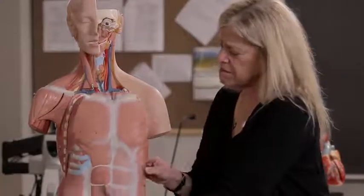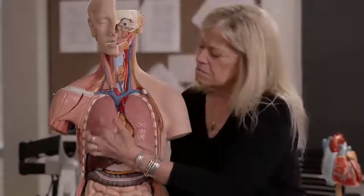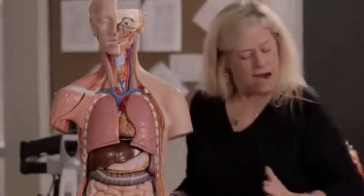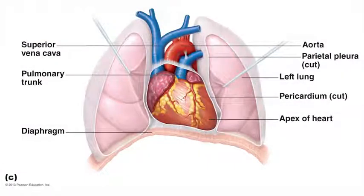I'll point out the sternum for orientation purposes, then take the front wall off this model so we can see the heart peeking out from between the two lungs — its normal position in the thoracic cavity. Our textbook shows the position of the heart in the thoracic cavity, and you can see that the heart is enclosed by a membrane layer called the pericardium. The lungs are also surrounded by membrane layers.